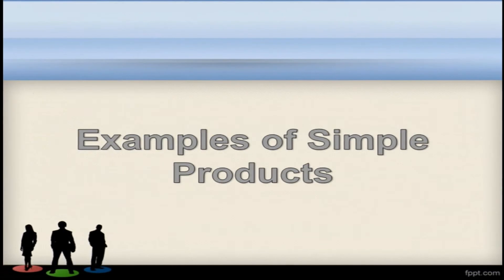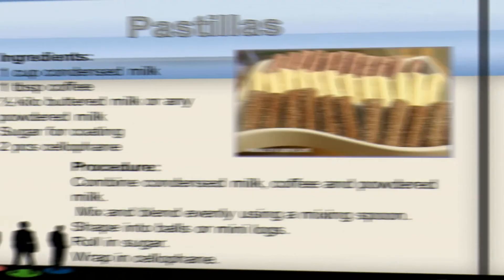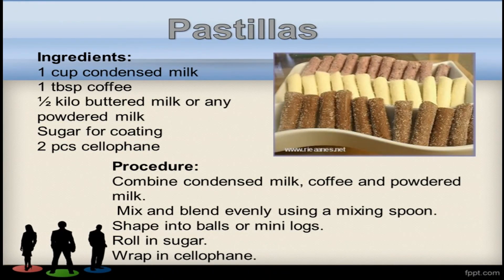There are many examples of simple products that you can find in our local market. I am only giving you two of them. One is polvoron — for the procedure on how to make polvoron, you can go back to this video and read the procedure. Then we have the pastillas. You will only need one cup condensed milk, one tablespoon coffee, one-half kilo buttered milk or any powdered milk, sugar for coating, and two pieces of cellophane.